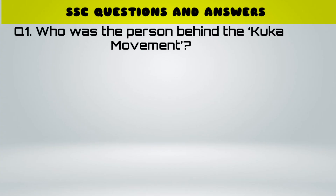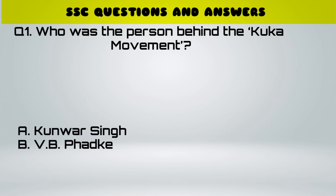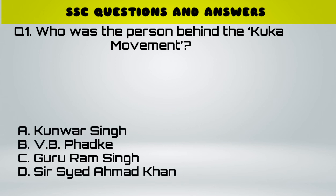Question number 1. Who was the person behind the KUKA movement? A. Kungwar Singh, B. VB Fadke, C. Guru Ram Singh, D. Sir Syed Ahmad Khan. Answer: C. Guru Ram Singh.